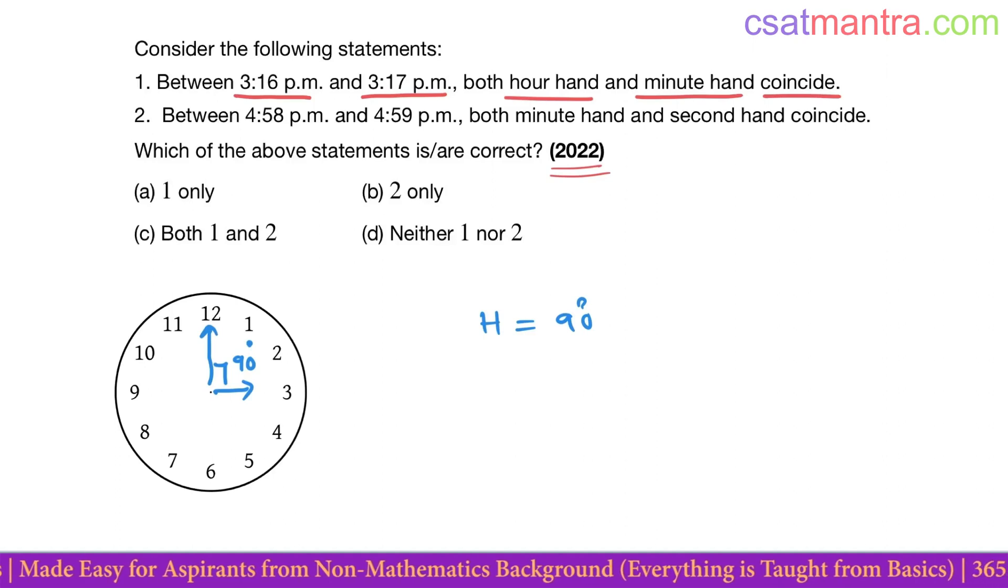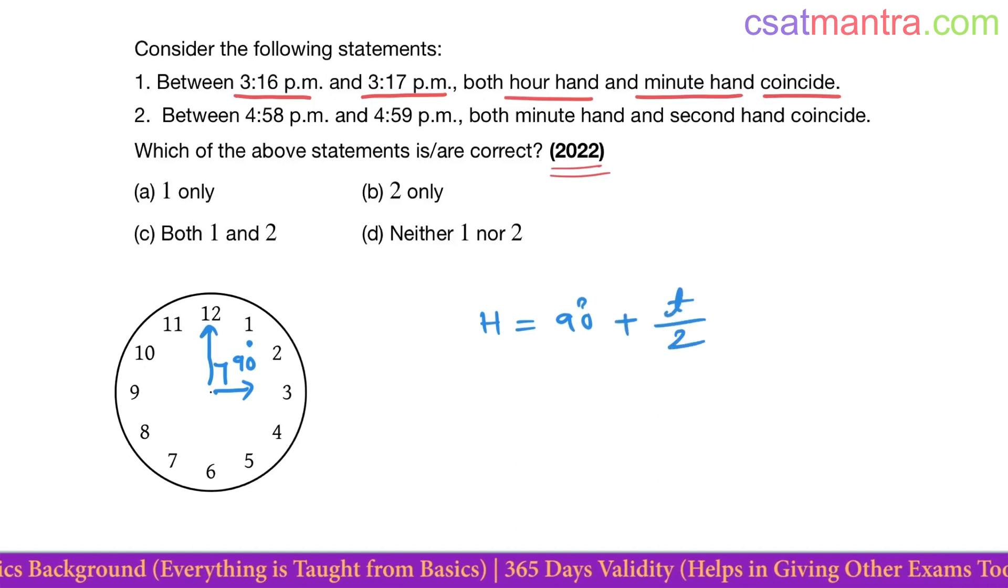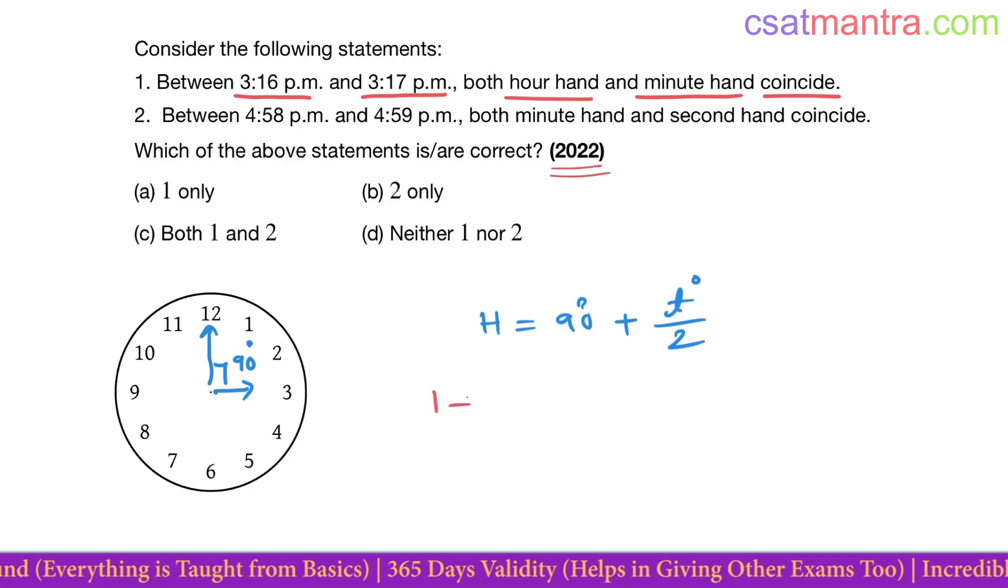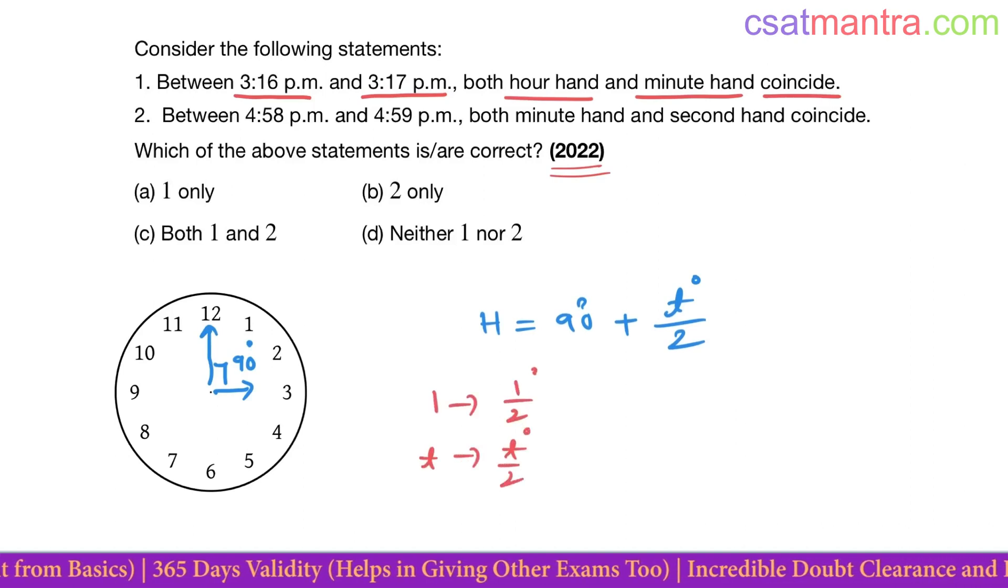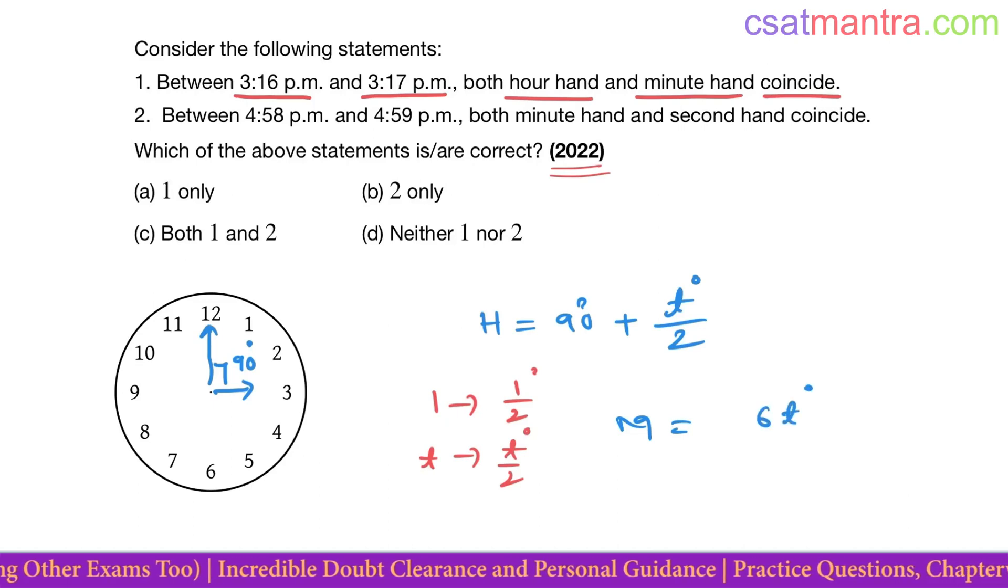Now minute hand started moving from 12, so t minutes it moved. So in those t minutes, hour hand will make t by 2 degrees. See, one minute half degree, right? T minutes, t by 2 degrees. So hour hand will make t by 2 degrees. Now minutes hand in t minutes it makes 6t degrees, because in one minute it makes 6 degrees, t minutes 6t degrees.